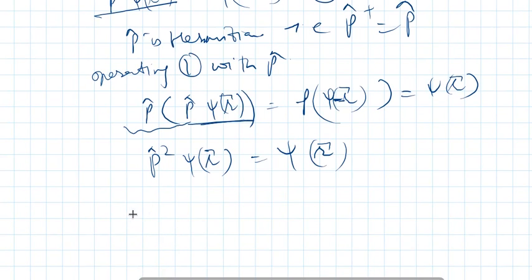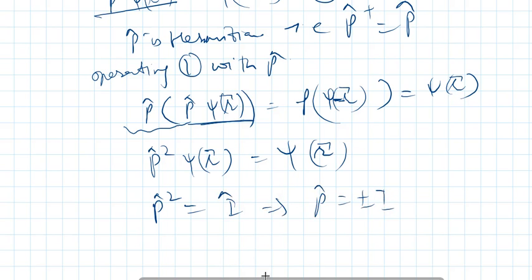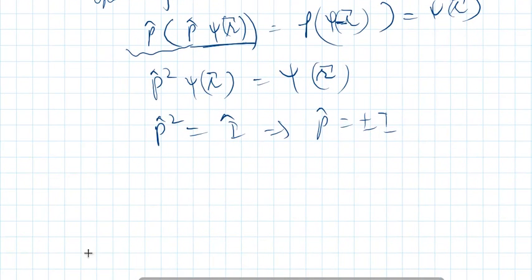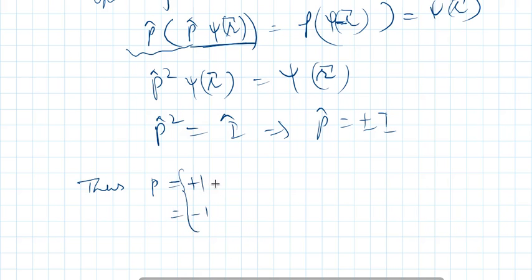This suggests that P² must be equal to I, which implies P is equal to plus or minus 1. If the eigenvalue corresponding to the parity operator P is +1 it is known as even parity, and if it is -1 it is known as odd parity.